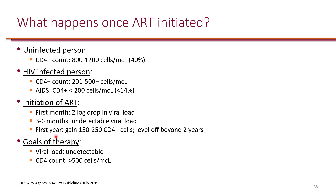When it comes to CD4, within the first year it is expected that patients will gain about 150 to 250 CD4 cells. This levels off beyond two years and will not continue rising to normal. The goal of therapy is to have an undetectable viral load and a CD4 count of at least 500, because opportunistic infections start to emerge below 500, especially below 200.